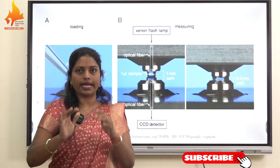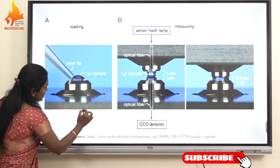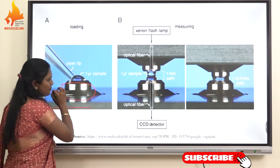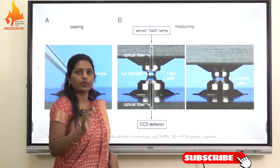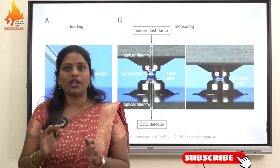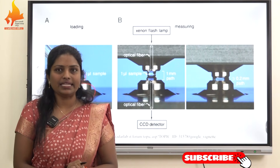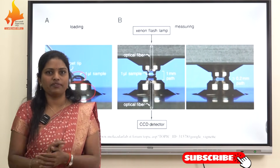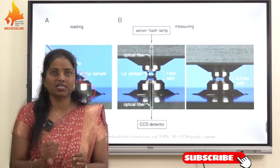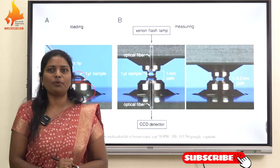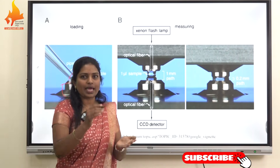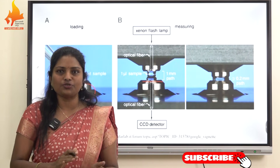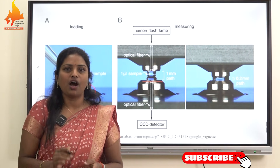A unique and important feature of the nanodrop technique is its variable path length, which typically ranges from 0.5 mm to 1 mm. Unlike conventional spectrophotometers that use a fixed one-centimeter path length, the nanodrop automatically adjusts the path length according to the sample concentration. The lower pedestal holds the sample as shown in the slide.